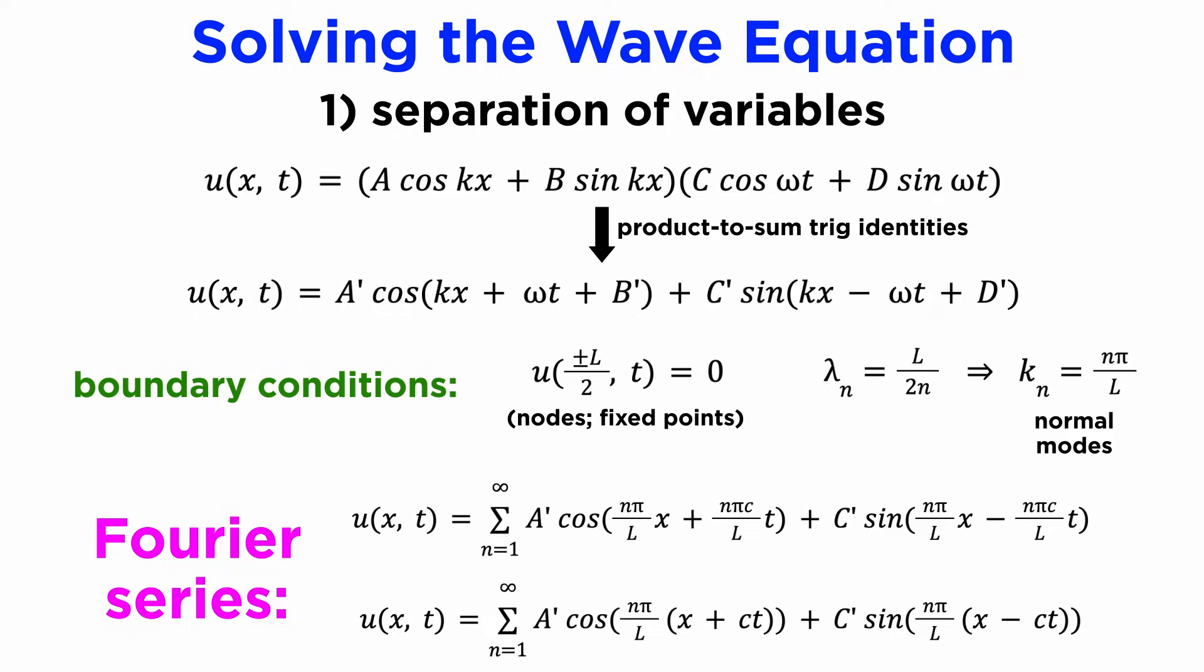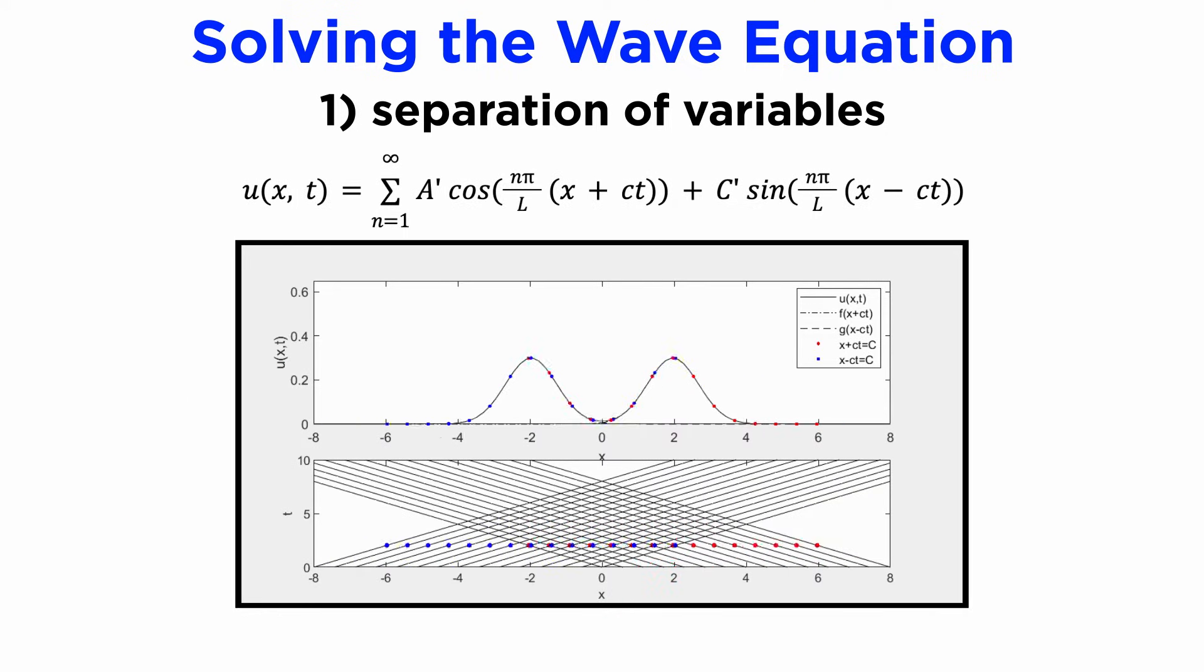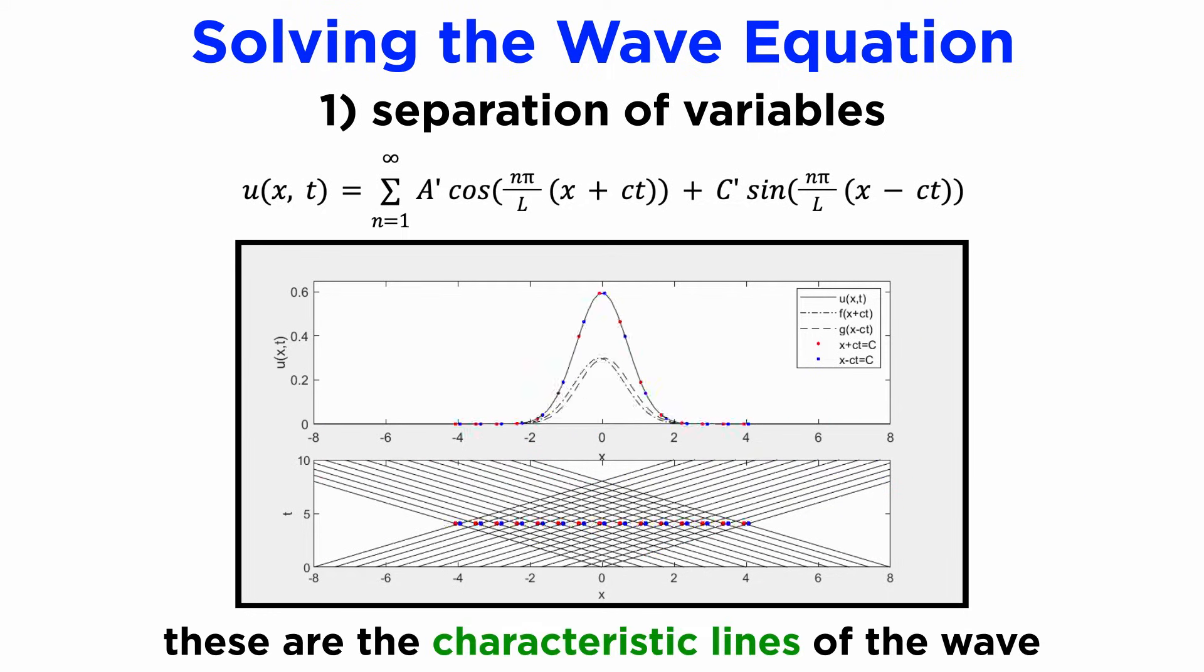We can also interpret our answer as a Fourier series, where the coefficients a and c are the terms of the Fourier series of some function of x plus or minus ct. The roots of these functions, which are the lines x plus or minus ct equals zero when plotted in xt space, are called the characteristic lines of the wave, and these lines can be interpreted as the directions along which the information in the system can propagate.